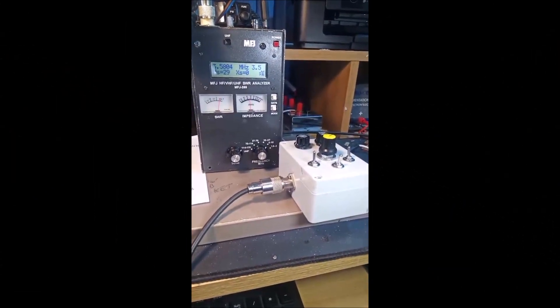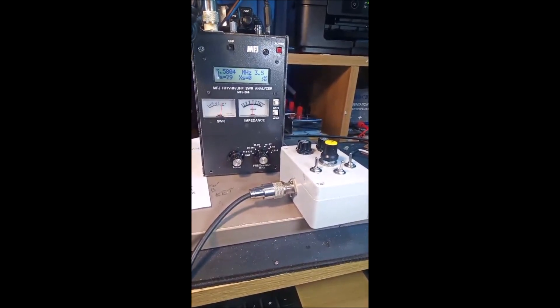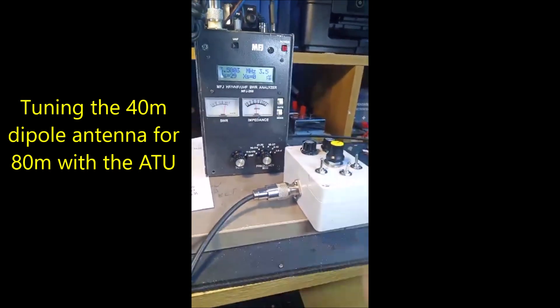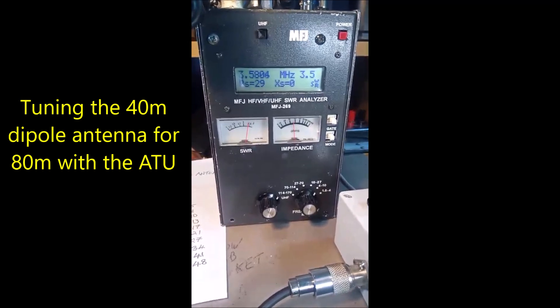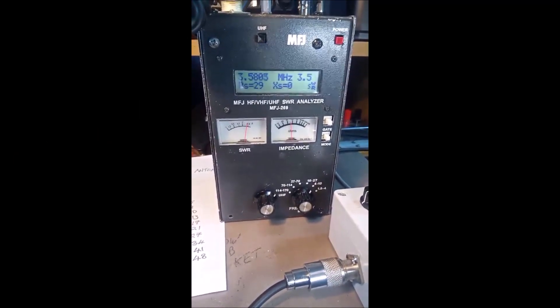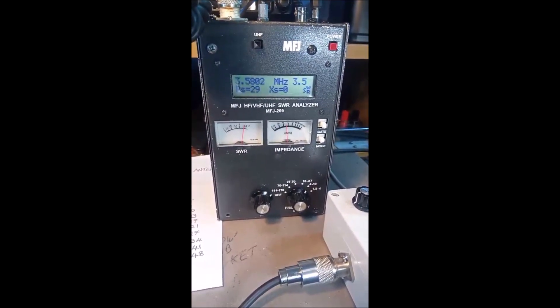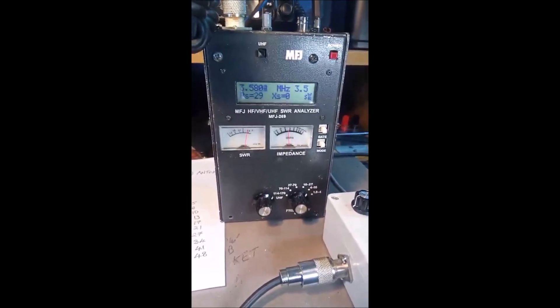For this demonstration, I'm on the 80 meter band and I have the bypass switch activated here. So the SWR through direct to the antenna, it's a 40 meter dipole I'm working on as my antenna. So you can see there the SWR is 3.5 in the bypass mode.